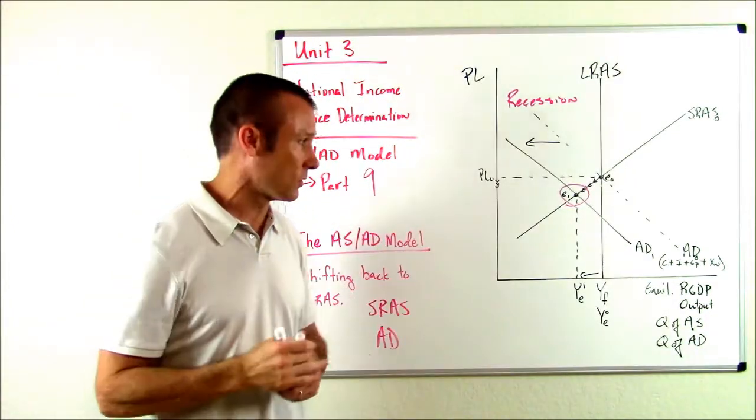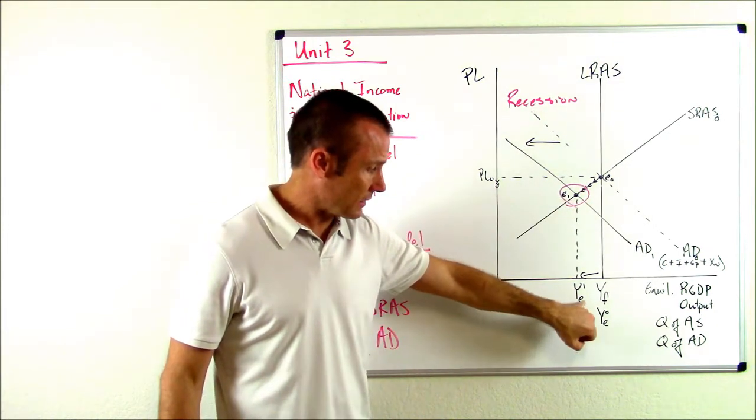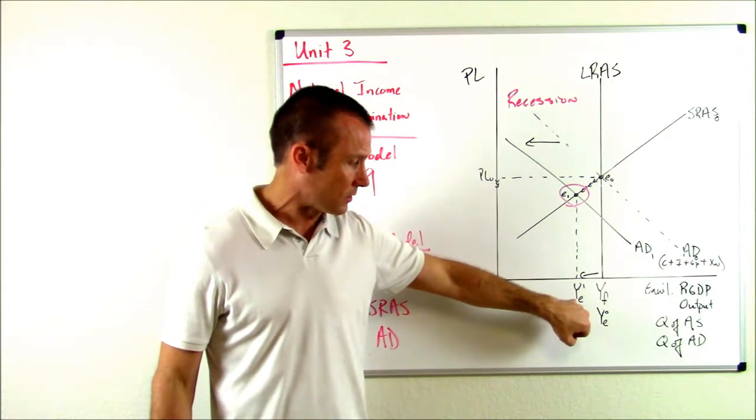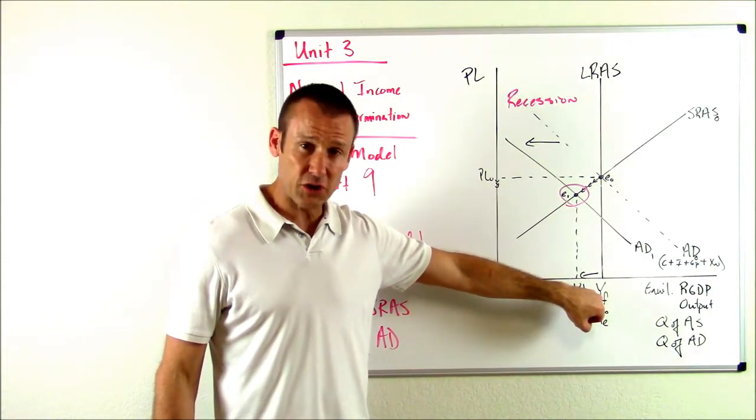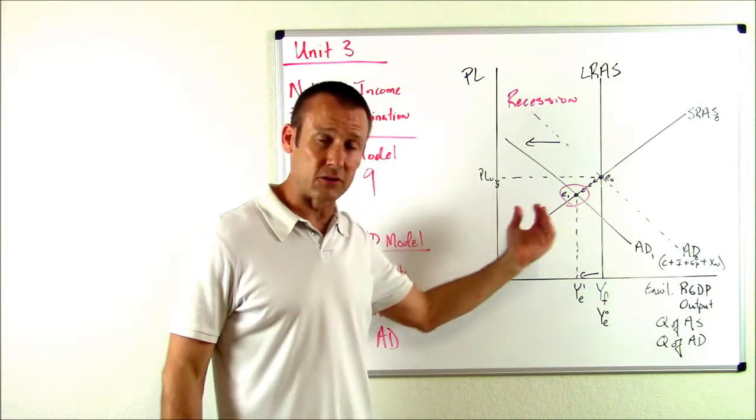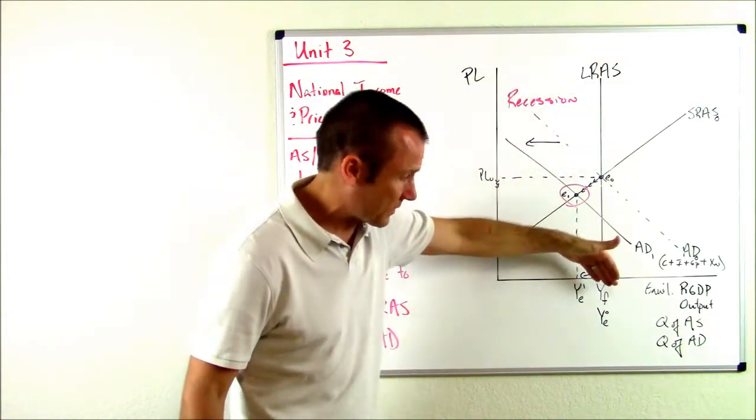And when AD shifted to the left, it brought us to this new equilibrium, YE sub one—that was YE sub zero. My equilibrium output with my first change. And my first change was the stock market crashing and AD shifting to the left, which brought me to an equilibrium point not on the LRAS.